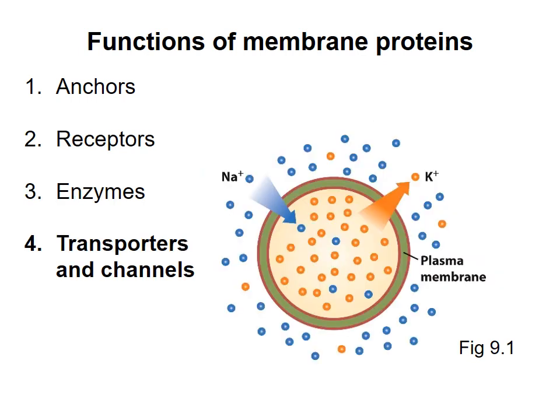Because the membrane is hydrophobic, ions and most polar molecules can't cross it. So the cell uses proteins to import and export molecules, allowing it to control its internal environment. The process by which proteins move molecules across a membrane is called facilitated transport. The two main types of proteins used for this purpose are transporters and channels.